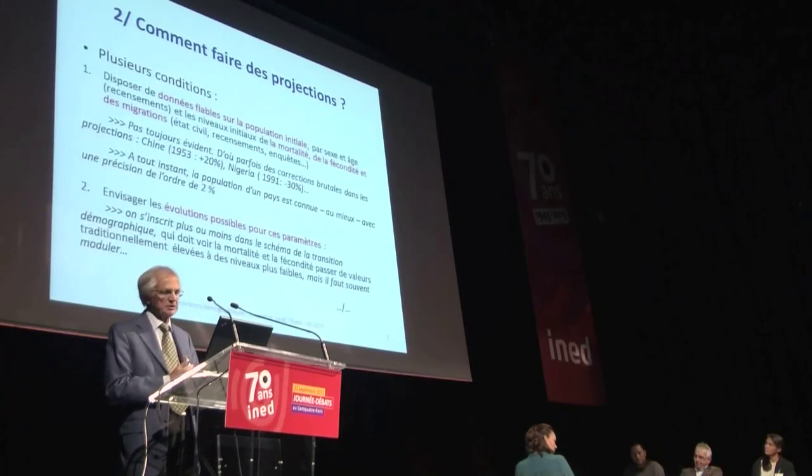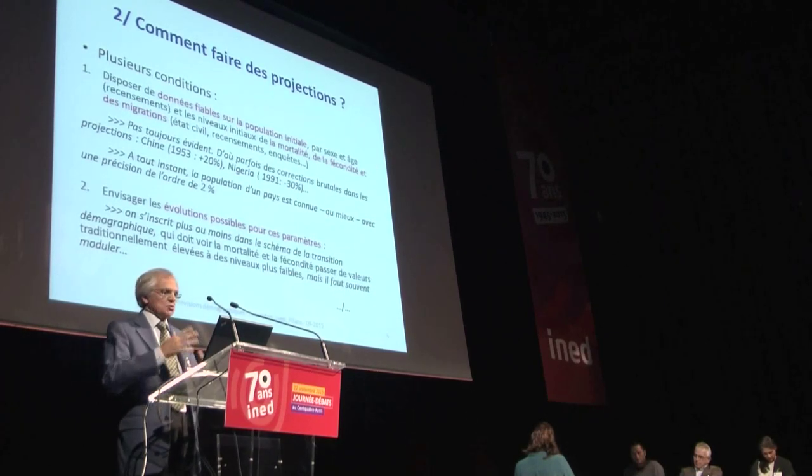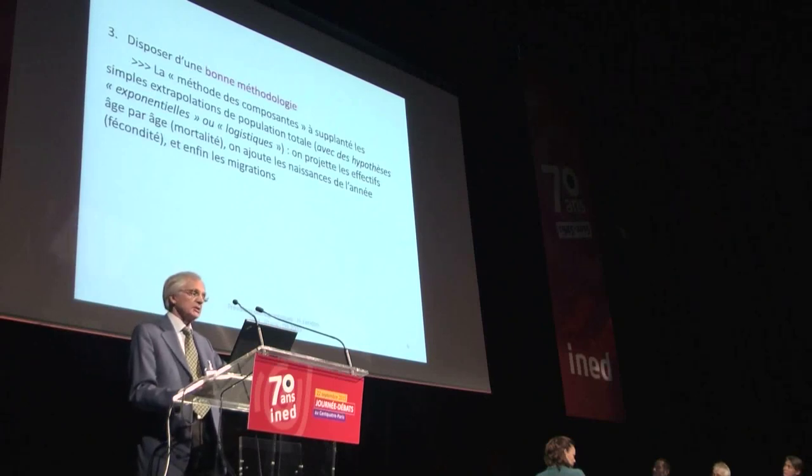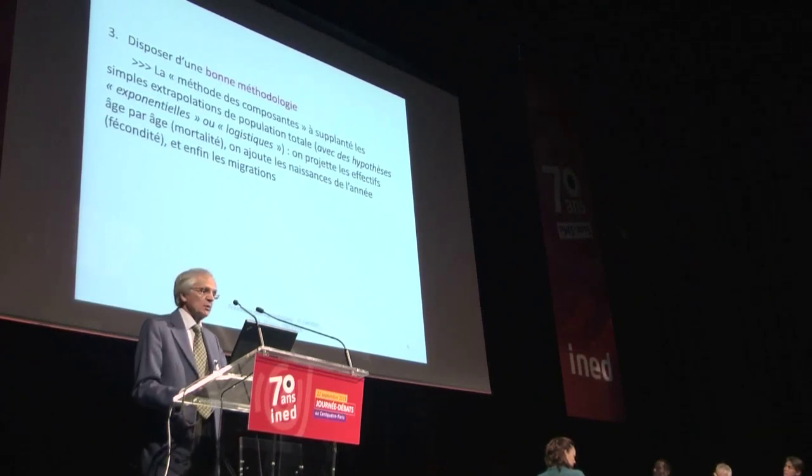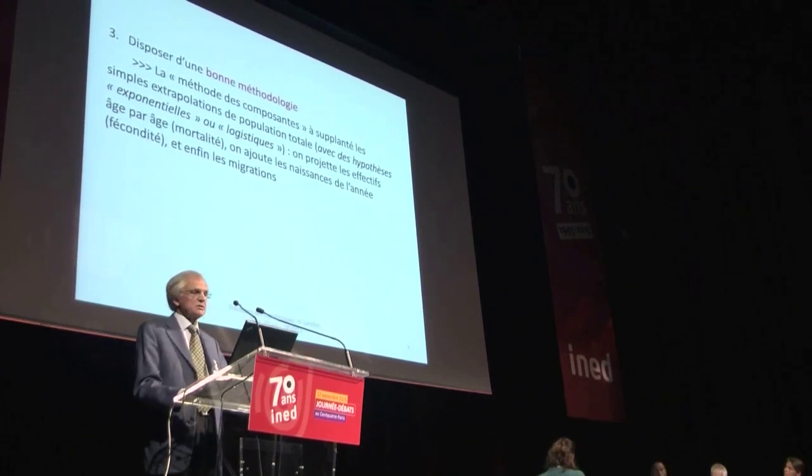Next, we need to calculate the possible trends in these parameters. For world projections, we apply the basic paradigm of the demographic transition, where mortality, followed by fertility, starts falling from initially high levels to much lower ones. That trend is spreading across the world, but we have to adapt that paradigm to the specific experiences and context of each country, so it is only a rough guide. The cohort component method has replaced older extrapolations of the total population based on assumptions of either exponential growth or a logistic function.